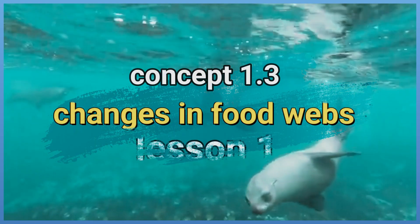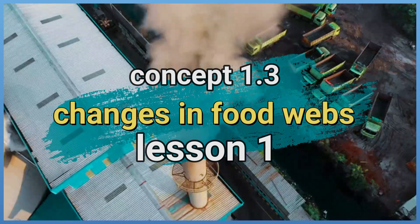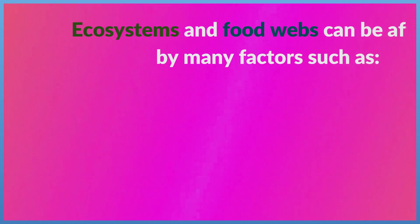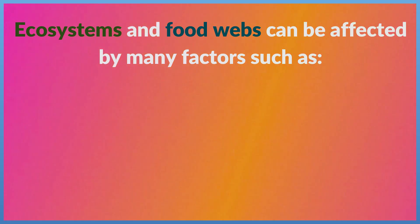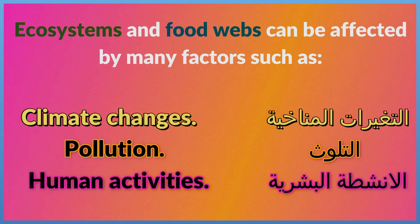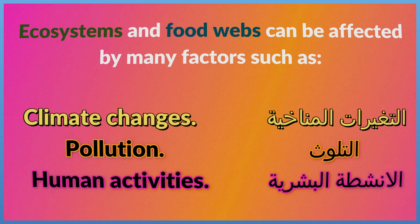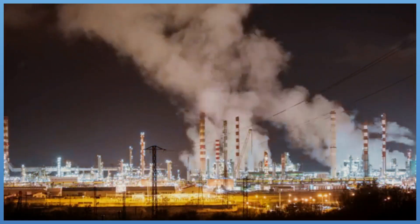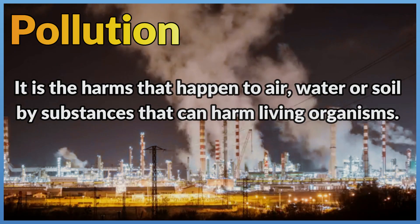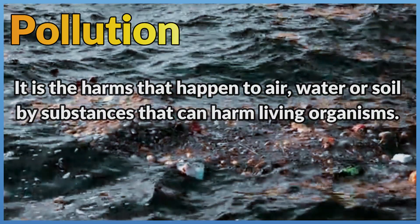Concept 1.3: Changes in Foodwebs, Lesson 1. Ecosystems and foodwebs can be affected by many factors such as climate changes, pollution, and human activities. Note: Pollution is the harm that happens to air, water, or soil by substances that can harm living organisms.